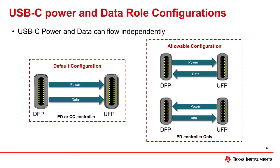In legacy USB devices, the data and power roles are the same and always connected with the USB host or DFP — a USB host is always the data source and the power provider. However, with USB Type-C, the data and power roles are now separated. You can have a case in which a USB device is a data sink but a power provider, or a USB host that is a data source but a power sink. USB Type-C also provides the ability to do separate data role or power role swapping — for example, a device may keep its data sink role but switch from a power provider to a power sink.